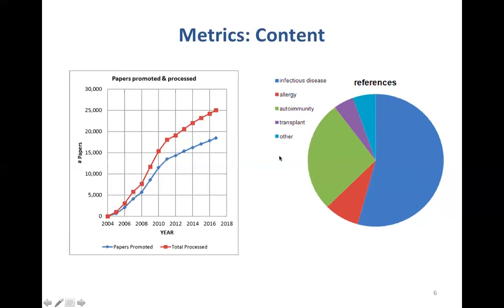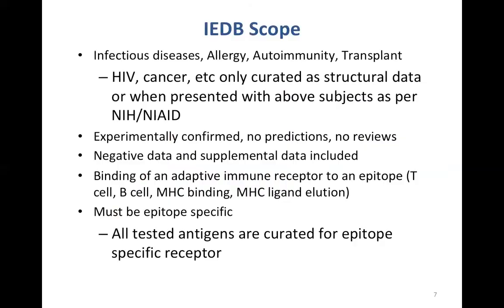Within autoimmunity, we have quite a bit of Parkinson's and Alzheimer's research, and a lot of experimental encephalitis research from mice for MS. The scope of the IEDB covers infectious disease, allergy, autoimmunity, and transplant.